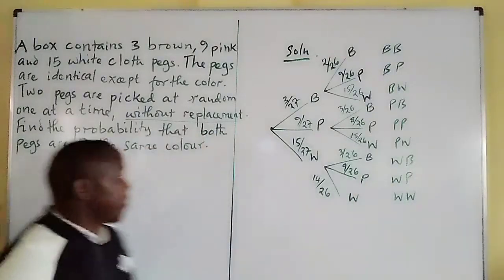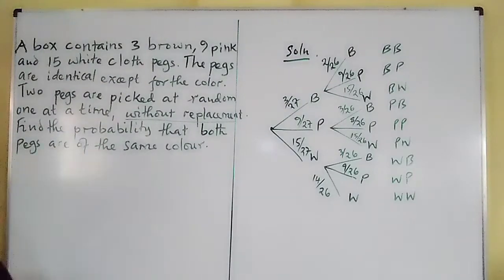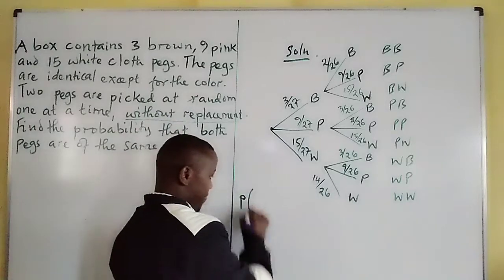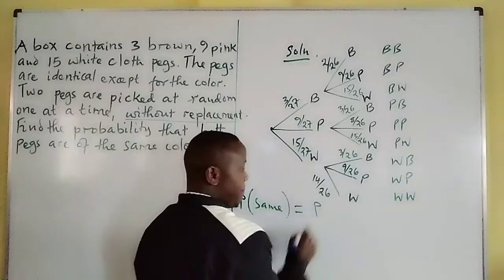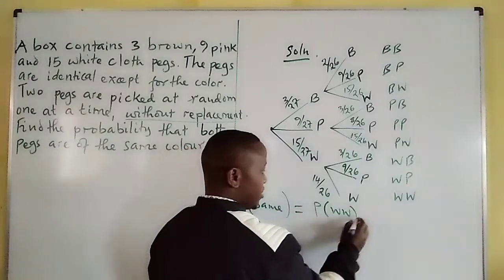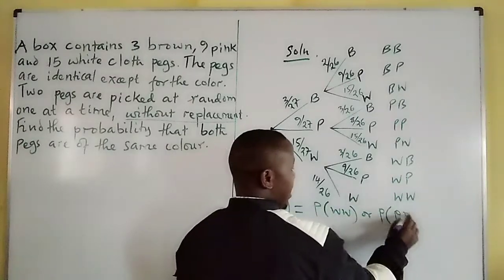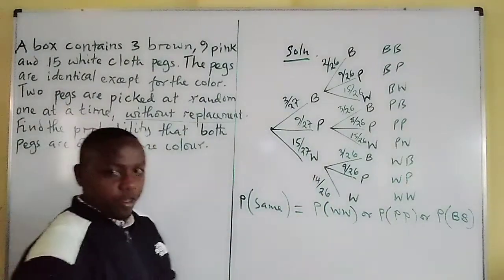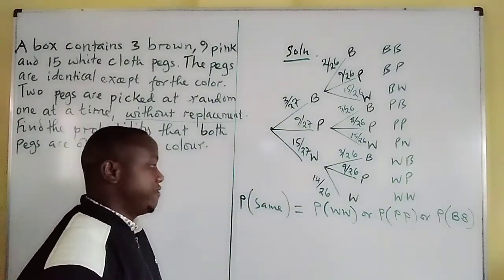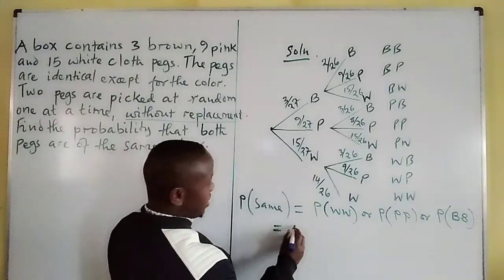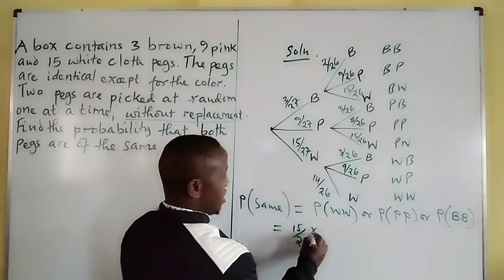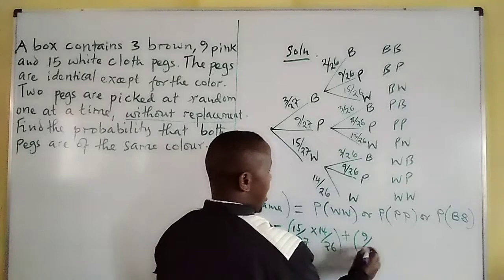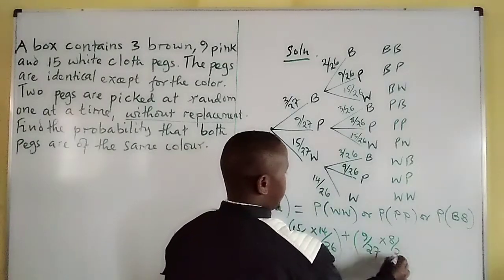We want to find the probability that both pegs are of the same color. Same color means we need white and white, or pink and pink, or brown and brown. White and white will be 15 out of 27 multiplied by 14 out of 26. Pink and pink will be 9 out of 27 times 8 out of 26.